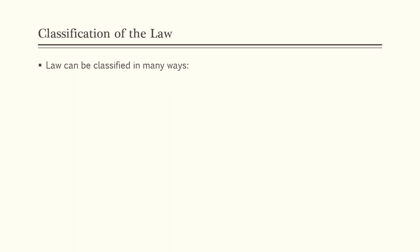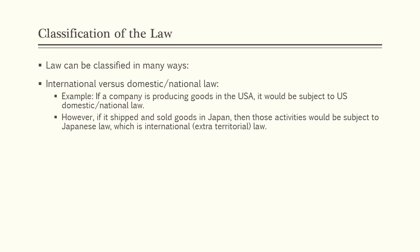Law can be classified in many ways. The first is international versus domestic or national law. For example, if a company is located in the United States and selling to U.S. customers in U.S. states or territories, the company would be subject to U.S. domestic law. However, if that company ships goods to Japan and sells to Japanese nationals, those activities would be subject to Japanese law, which is international or extraterritorial law.